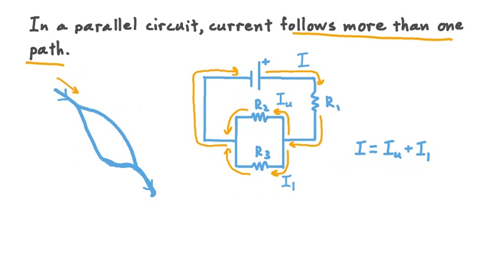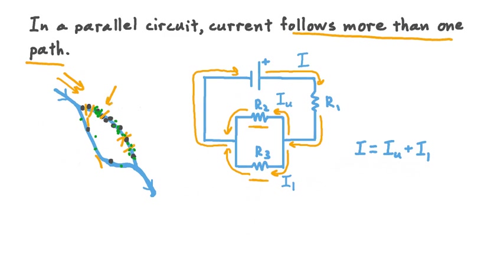One other thing to notice is that when current divides up across the branches, those current values might not be the same — I sub U might not equal I sub L. The relative values depend on the ratio of resistance of each branch. Our water analogy is helpful here: say one branch has lots of obstructions — sticks, rocks, and leaves — while the other branch has very few obstructions and water can flow mostly unimpeded. The branch with fewer obstructions handles more current flow, while the obstructed branch might pass only a trickle.